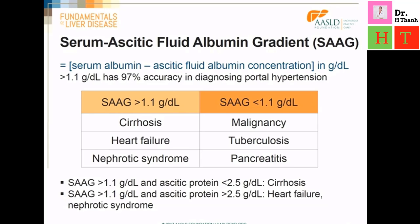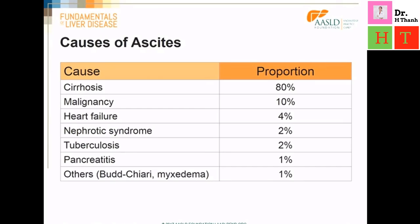Here is where the ascitic protein count becomes useful. If the SAAG is more than 1.1 grams per deciliter and the ascitic protein is less than 2.5 grams per deciliter, the cause of the ascites is likely related to cirrhosis. However, if the SAAG is more than 1.1 grams per deciliter and the ascitic protein is more than 2.5 grams per deciliter, then the cause is likely related to heart failure or nephrotic syndrome. Cirrhosis accounts for the majority of cases of ascites overall.